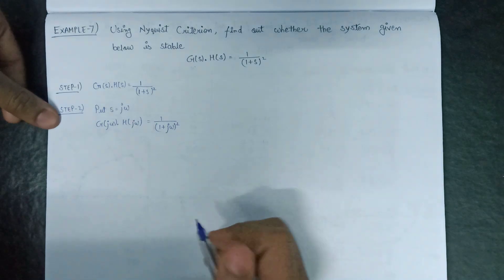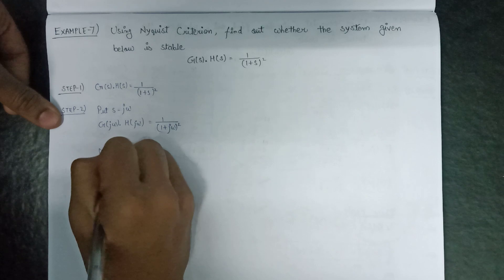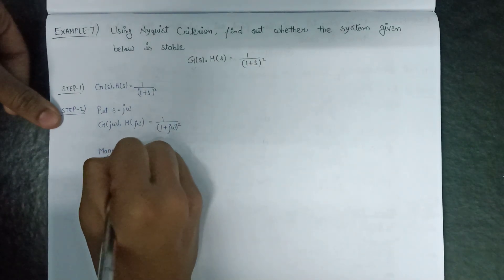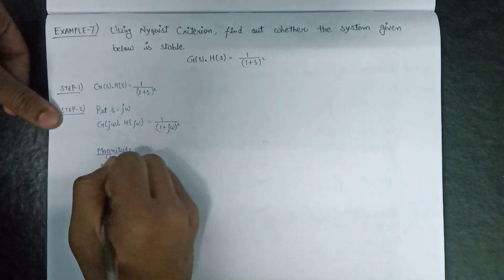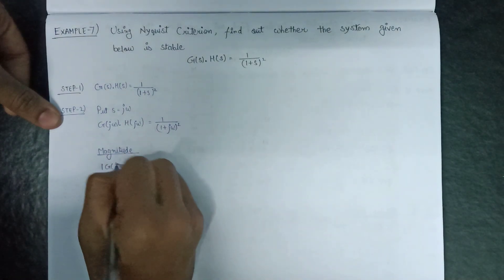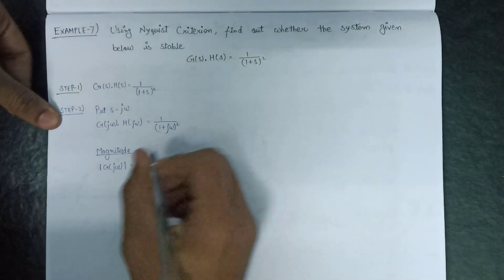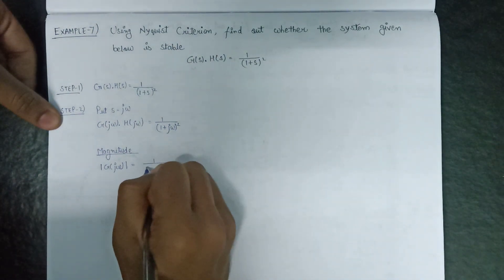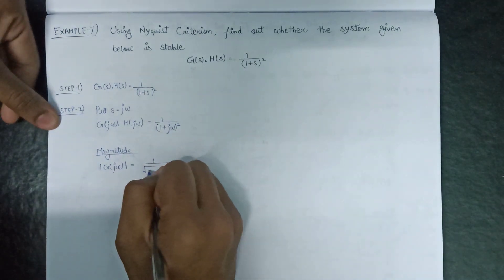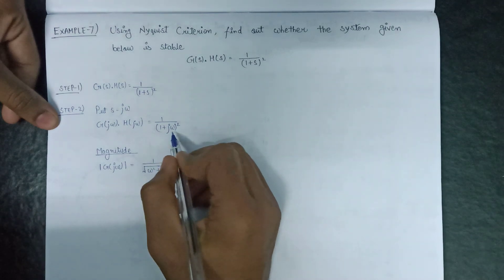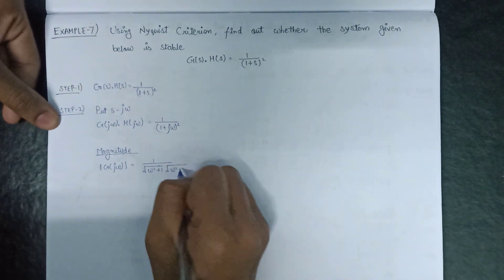After this we need to calculate the magnitude. The magnitude |G(jω)| will be equal to 1 over the square of √(ω² + 1). Since the denominator is raised to the whole square, we write √(ω² + 1) twice, giving 1 / (ω² + 1).